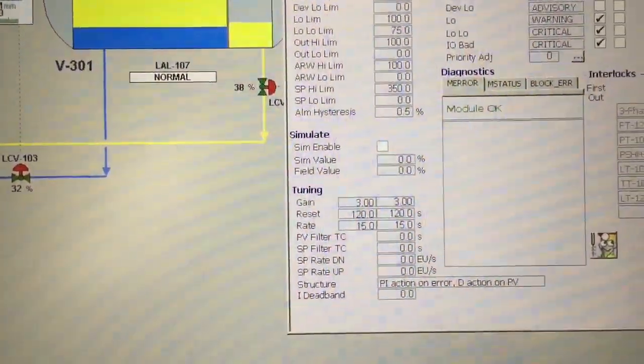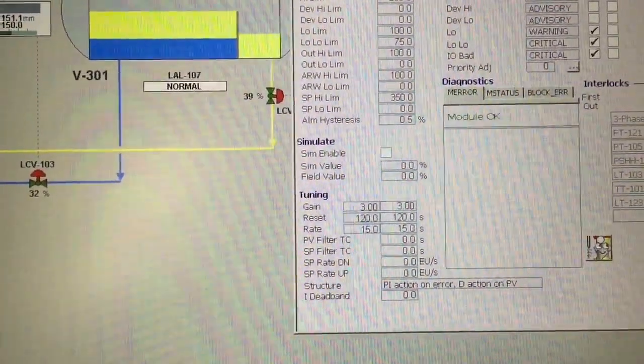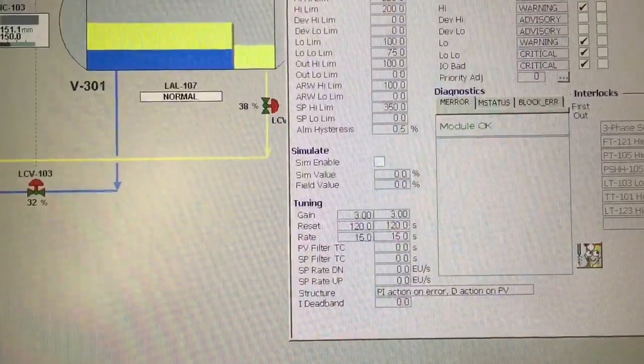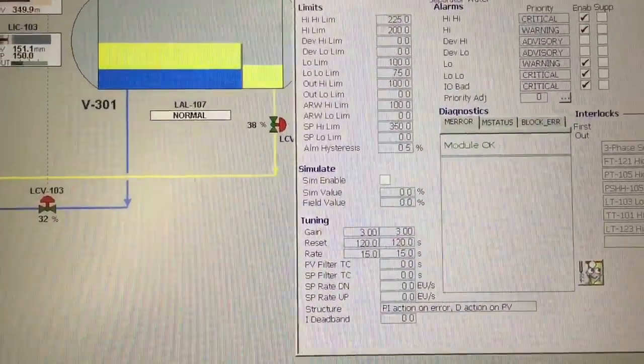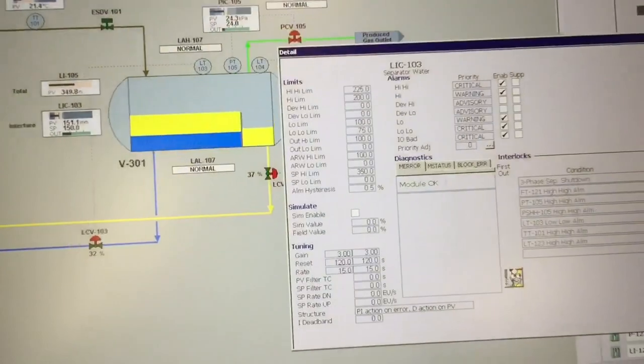We have our gain at 3, our reset at 120 seconds, and our rate set for 15 seconds. It's a pretty slow process so we're using rate or derivative as well.